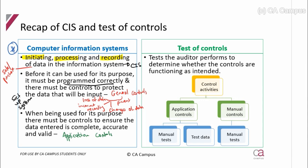Application controls include access controls, screen aids, program checks, and logs and reports showing what has been input. These cover your input, processing, and output controls — the input of data and information, because the system has already been set up appropriately. So we looked at how using a computer information system affects the auditors, and understanding that they have a CIS means we can now go and test it.